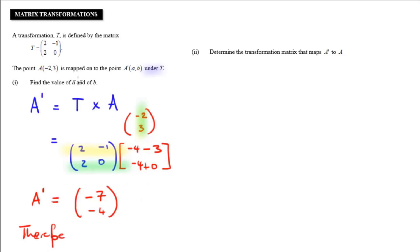Therefore, A — which is the x-coordinate — equals negative 7, and B — which is the y-coordinate — equals negative 4.